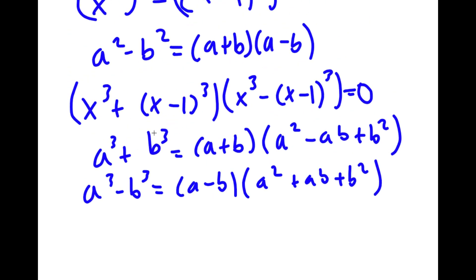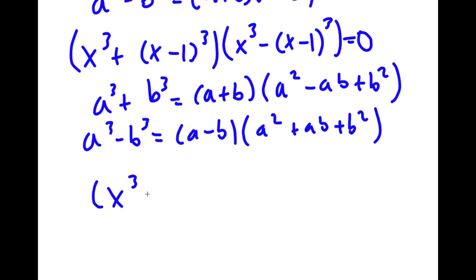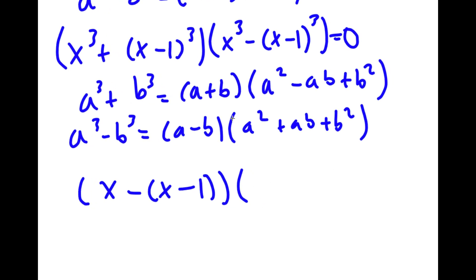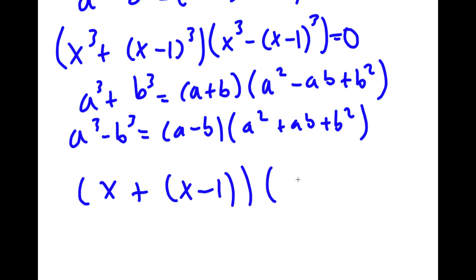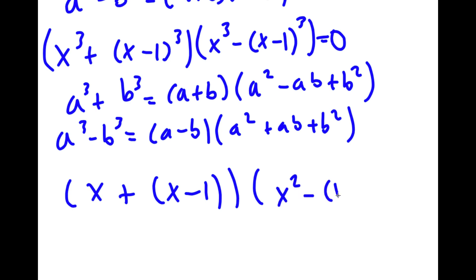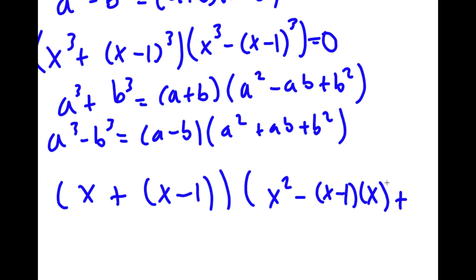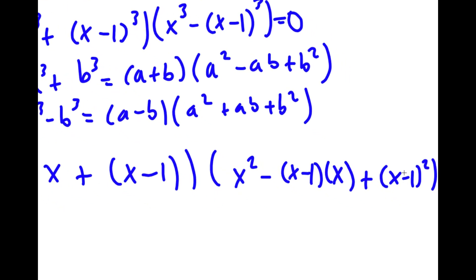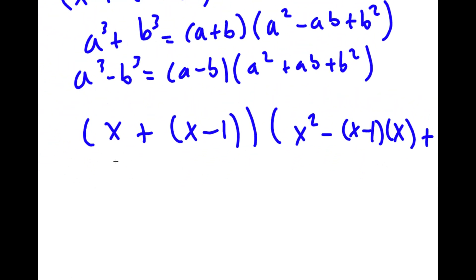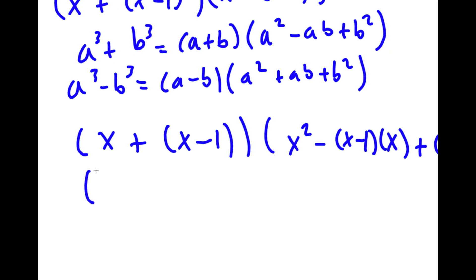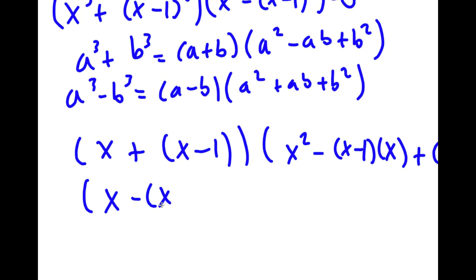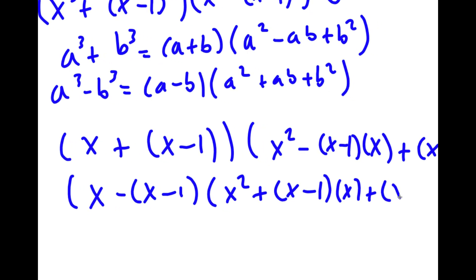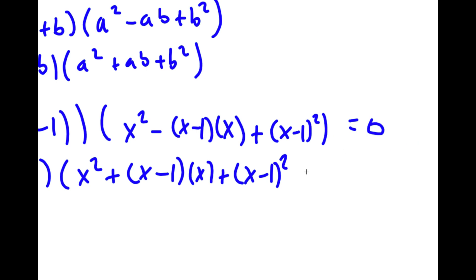So I'm going to rewrite this as x plus x minus 1, times x squared minus x times x minus 1 plus x minus 1 squared. These two factors give us two separate equations, each set equal to 0.